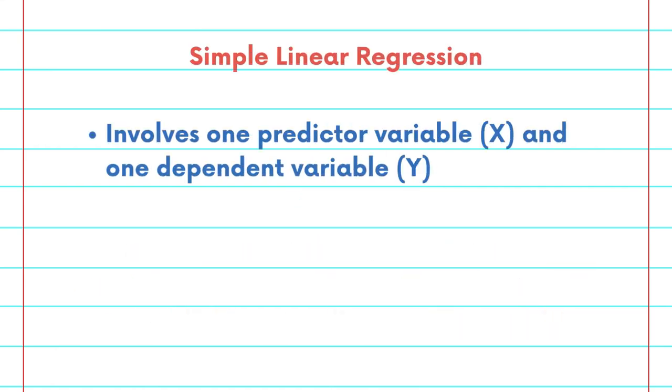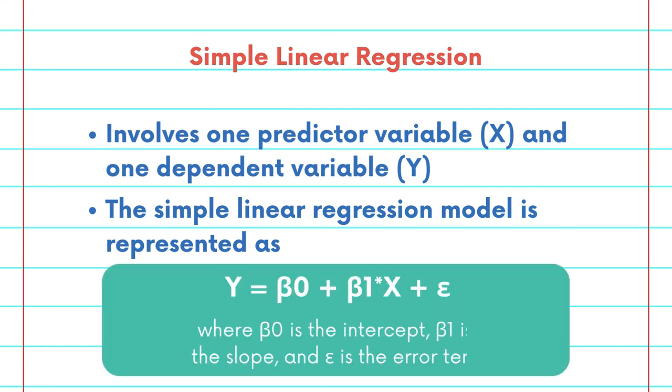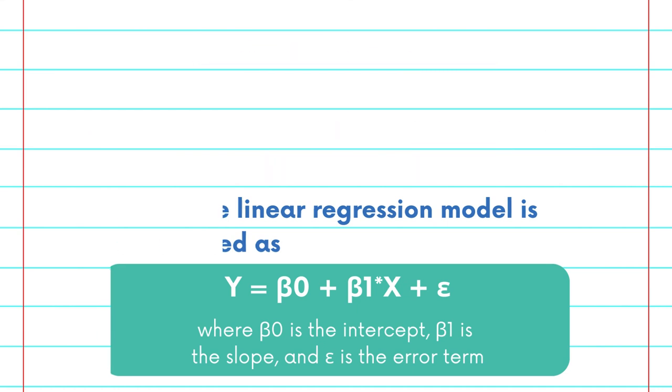Simple linear regression basically means it only involves one predictor variable x and the dependent variable y. So the formulation of simple linear regression is represented as y equals beta 0 plus beta 1 times x plus epsilon. Where beta 0 is the intercept, beta 1 is the slope, and epsilon is the error term.